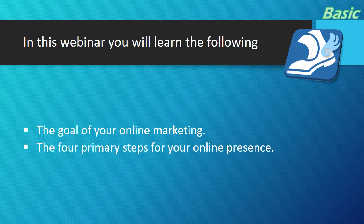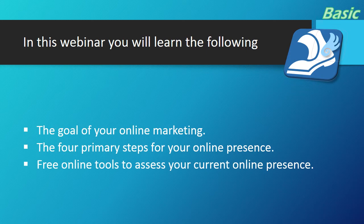We're going to look at the four primary steps for your online marketing — four things that need to get done. This is the basics for marketing. And then I'm going to give you some free online tools to assess your current online presence. Like when you go into a new mall and there's that sticker on the map that says 'you are here' — that's what we're going to do. We're going to find out where you are so you know where you need to go.